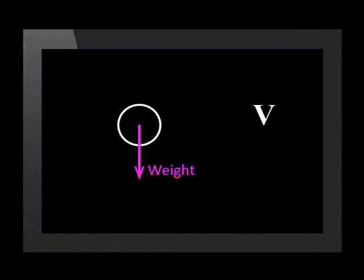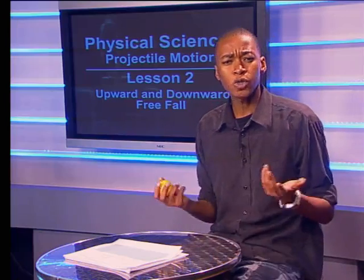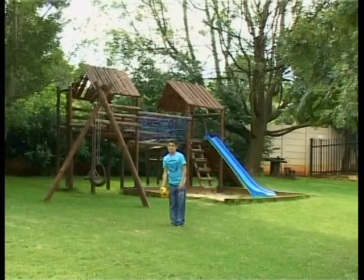Just before the ball leaves the hand it's going its fastest. From that moment the hand does not touch the ball, so the ball's weight is the only significant vertical force on it — so the ball is in free fall. While the hand touched the ball it made it go faster and faster; in other words it increased the ball's momentum. The ball's momentum keeps it moving upward even though it is being pulled downward by its weight.